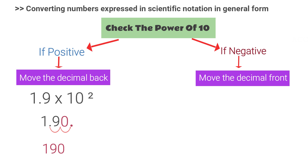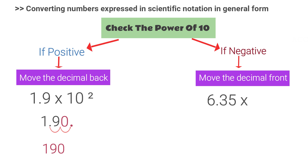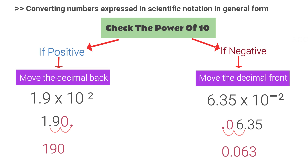So if five point two one into ten to the power minus three is to be written in general form, we bring the decimal point forward three times. Here also we can put zeros if needed — then it becomes zero point zero zero five two one. Finally, six point three five into ten to the power minus two: we go forward two times, then it becomes zero point zero six three five.